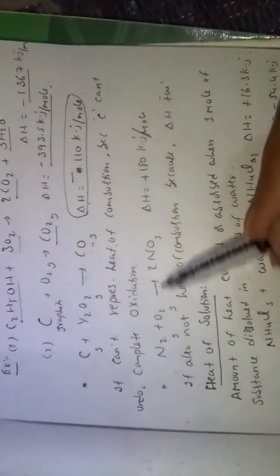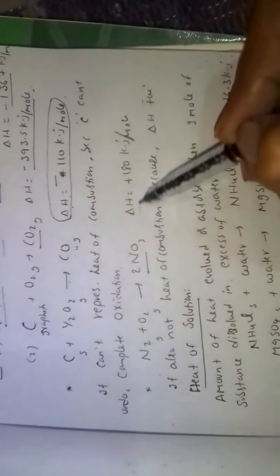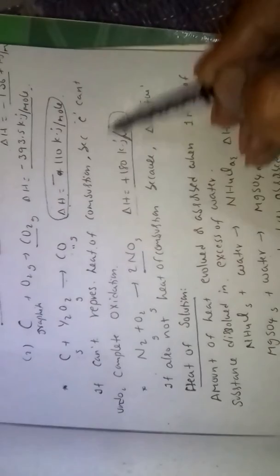N2 plus O2 gives rise to 2NO. In this reaction, delta H value plus 180 kilojoules per mole.